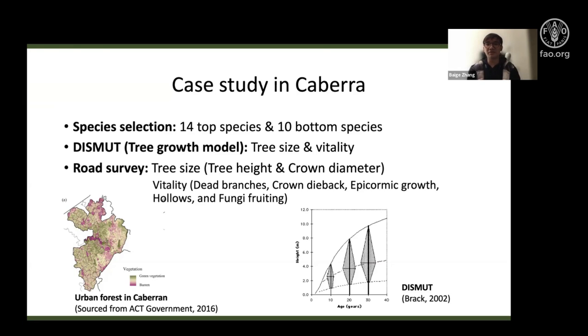In the road survey, we measured the tree size and used tree height and crown diameter as parameters. We also identified the vitality of urban trees. We used indicators such as dead branches, crown dieback, epicormic growth, hollows, and fungi fruiting.